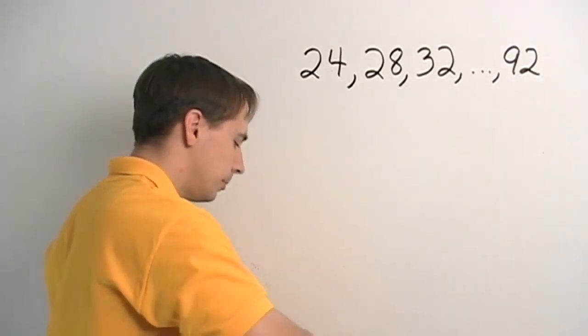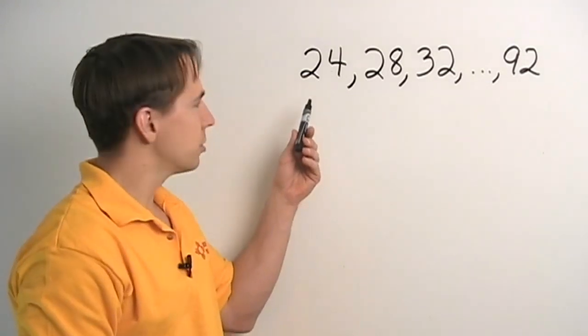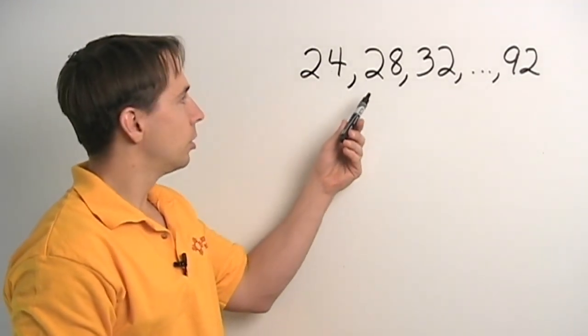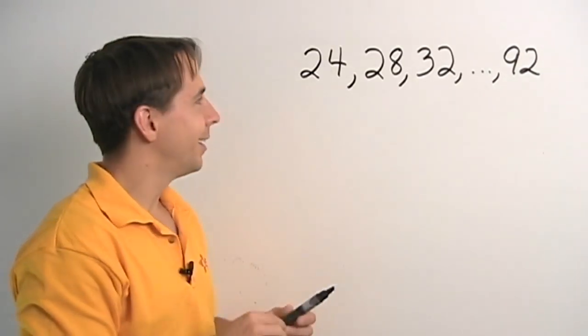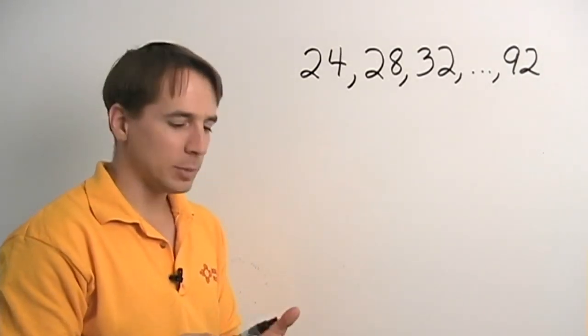And look at our original list here. Well, 24 is 4 times 6, and 28 is 4 times 7, and 32 is 4 times 8. Aha! 4 times 6, 4 times 7, 4 times 8.